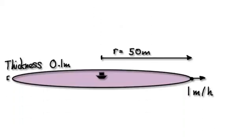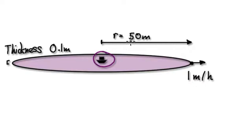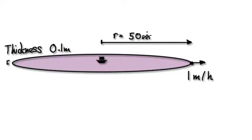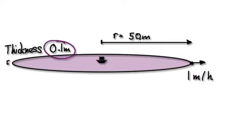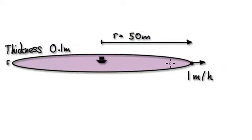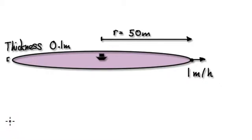Let's give you some more practice. An oil tanker has had a spillage. The thickness of the oil spillage is 0.1 metres. When the radius is 50 metres, the rate at which the radius is increasing is one metre per hour. Knowing this, work out the rate at which the oil is spilling out of the tanker. Press pause and have a go.